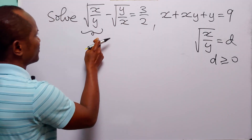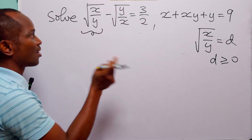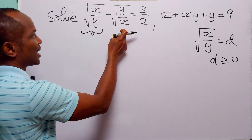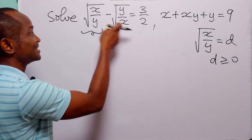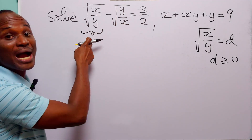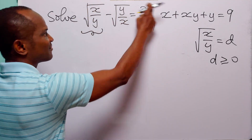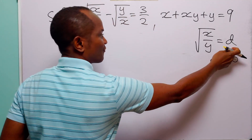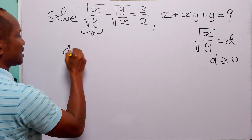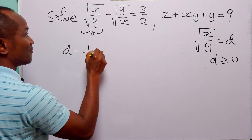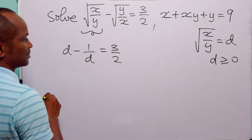Notice that here we have the square root of x over y, while here we have the square root of y over x. So this is the reciprocal of this. So when we rewrite this first equation in terms of d, we have d minus 1 over d is equal to 3 over 2.